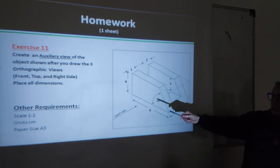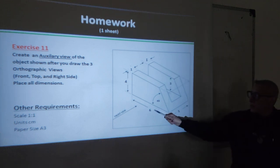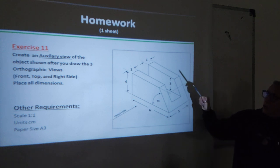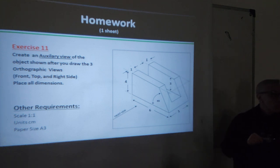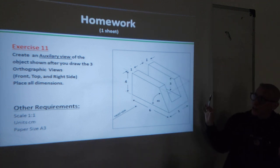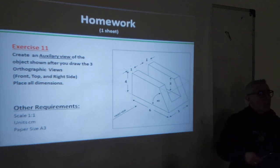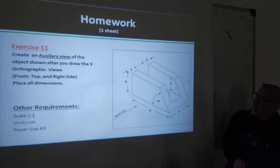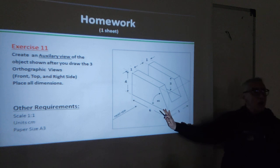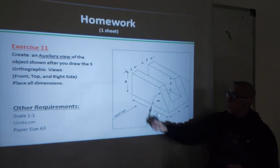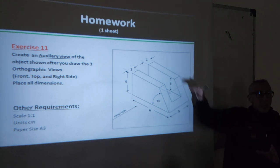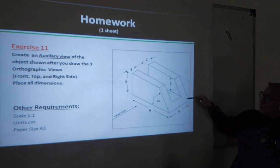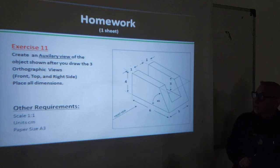This object will be drawn at scale one to one, meaning the measurements you see here in centimeters are transferred to the drawing as they are. You need to draw first three orthographic views: the front, the top, and the right side, with measurements according to the rules. Then this inclined surface here, you will draw it as an auxiliary view. You can draw it partial or full - it's up to you, both are correct. You take the 90-degree lines from the corners and draw the auxiliary view of this shape to show its true size.